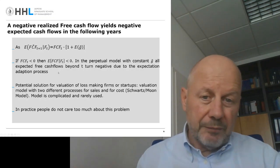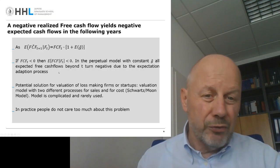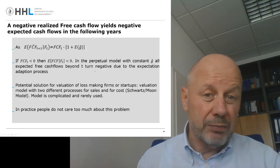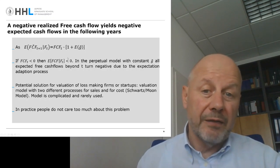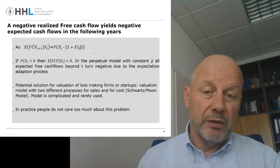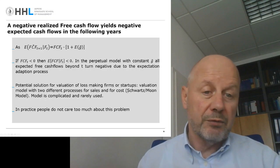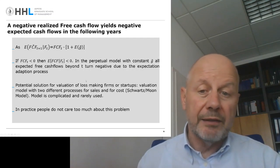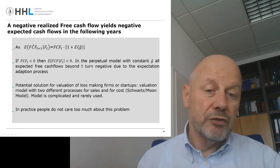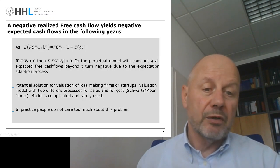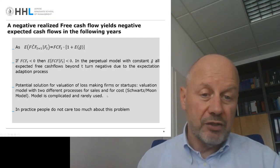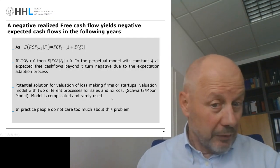And that creates a problem — especially a problem if we have to value startup companies that usually start with significant negative free cash flows and then hopefully turn into positive free cash flows again. This change of sign is extremely difficult, if not impossible, to model with just one process that links the current free cash flows to the future ones. A potential solution for the valuation of loss-making firms or startup firms is proposed by Schwartz and Moon. The idea is that you simply combine two different processes — adapted geometric processes — one for sales and one for costs, and then net the two against each other. By doing this, you avoid the problem that the process has to change sign itself. The model is rather complicated and rarely used in practice.